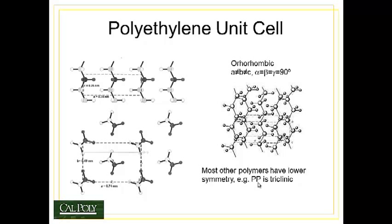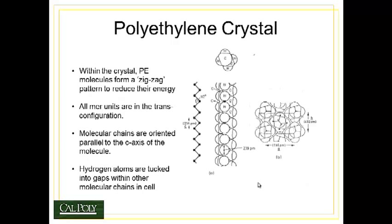For other polymers, like polypropylene, which is a more complex mer, we have a lower level of symmetry — polypropylene has a triclinic crystal structure.